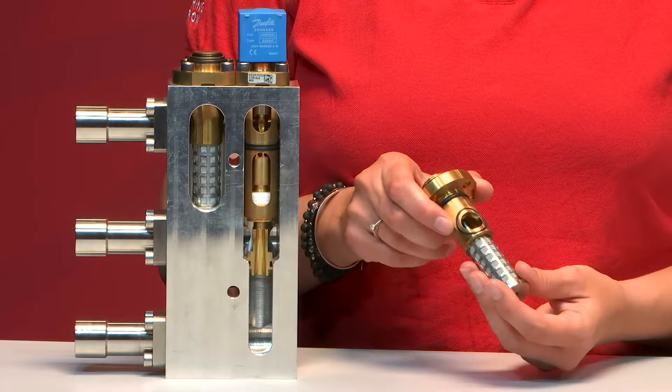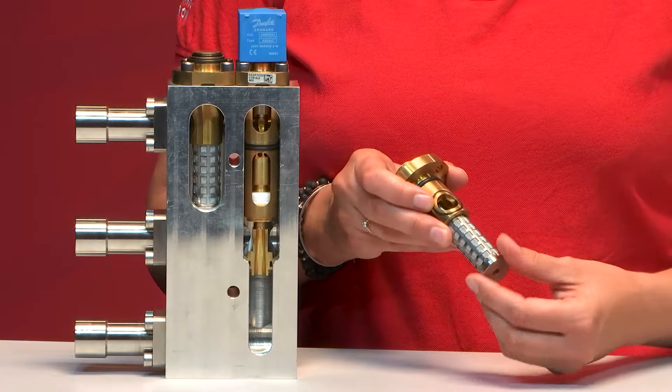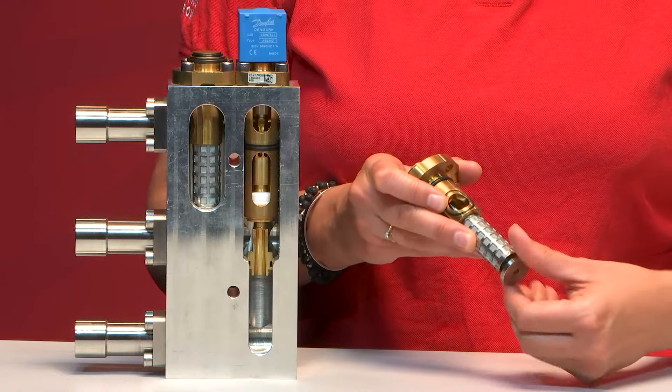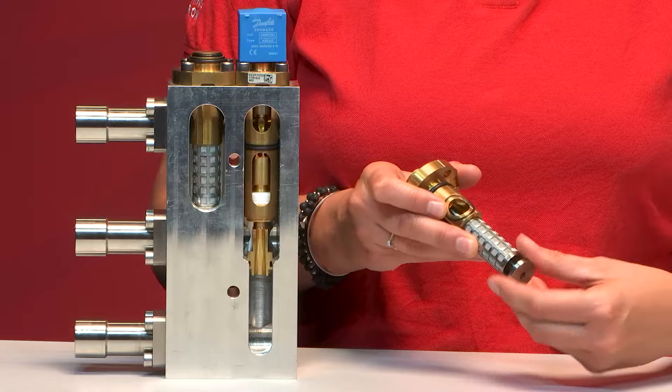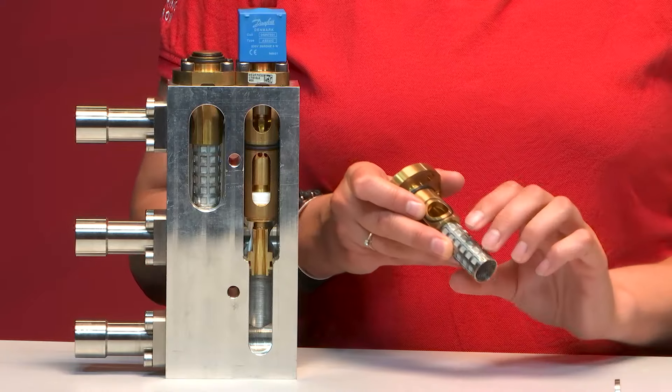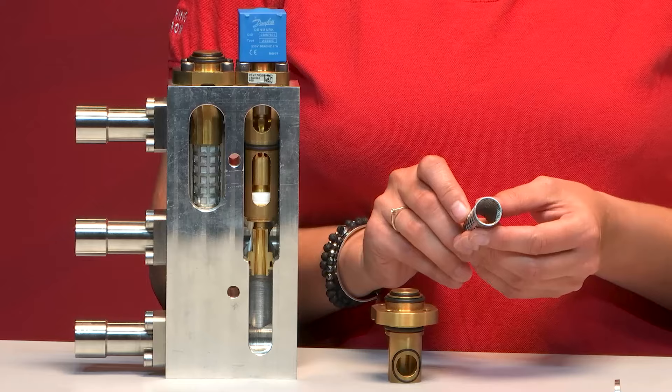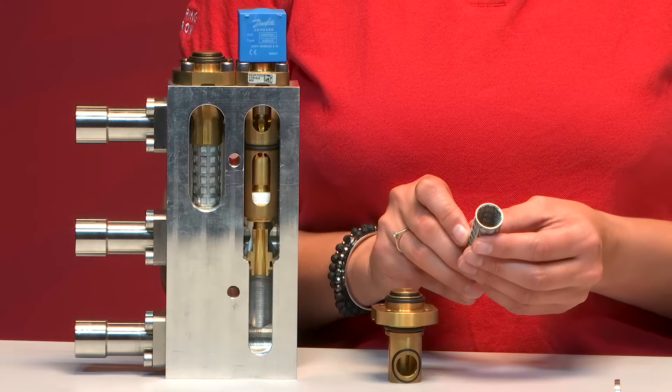Let's have a closer look at the strainer itself. You simply disassemble it by starting here to remove the bottom of the strainer. It is quite easy. You of course will have dirt that you have to take care of if it was in operation.